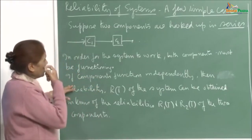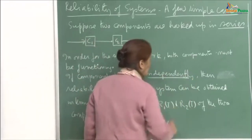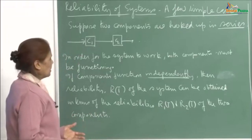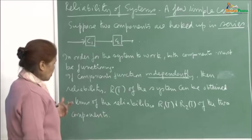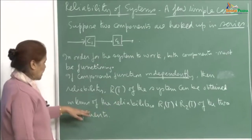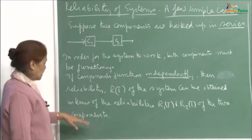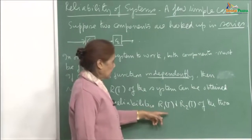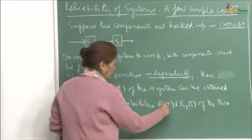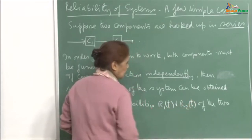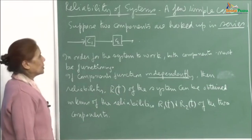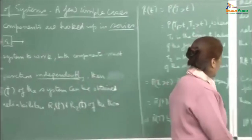We also make the assumption of independence. Otherwise things will get complicated, and we have learned methods for handling dependence. But right now, we just assume independence to show how to compute the reliability of the system. If they are functioning independently, then the reliability R(t) of the system can be obtained in terms of the reliability R1(t) and R2(t) of the two components.